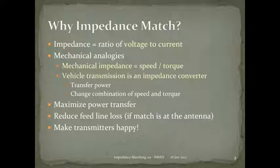The electrical impedance converter does exactly the same thing — it changes one combination of voltage and current to another, with power going through both systems. The mechanical gear train and the electrical converter both have power in equal to power out, less frictional or resistive losses. Think of your antenna tuner as just like your car's gearbox.